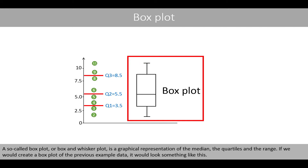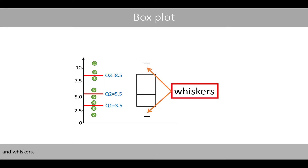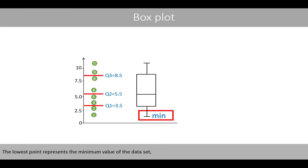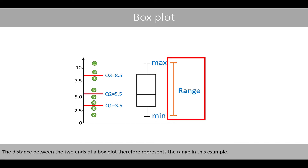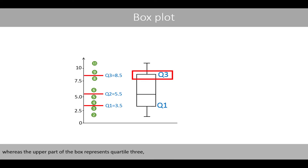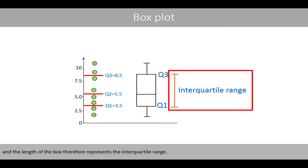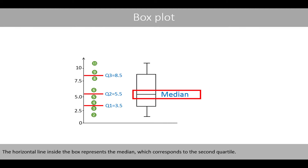If we create a box plot of the previous example data, it would look something like this. Note that box plots may also show outliers, which will be discussed in another lecture. A box plot is represented by a box and whiskers. The lowest point represents the minimum value, and the highest point represents the maximum value — so the full distance represents the range. The lowest part of the box represents quartile 1, the upper part represents quartile 3, and the length of the box therefore represents the interquartile range — covering approximately 50% of the middle data points. The horizontal line inside the box represents the median, which corresponds to the second quartile.